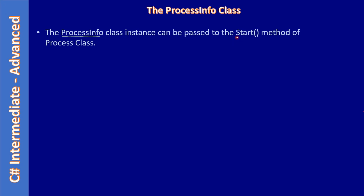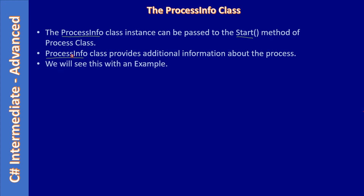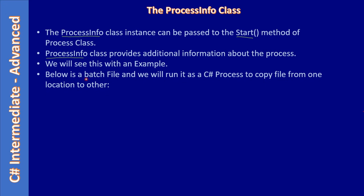Now we are looking into the third overload using the ProcessStartInfo class, which provides additional information about the process. In this video we will see what kind of additional information we can provide with this ProcessStartInfo class. We will see this with an example — below is the batch file, and we will run it as a C# process to copy a file from one location to another.